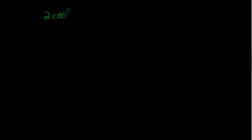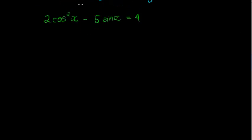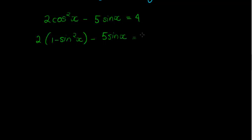Let's look at another equation: 2cos²x - 5sinx = 4. I want to solve for x. My suggestion is to let the trig ratio equal y, but which trig ratio? We need to choose to work with either sine or cosine. In this case, we can't change sine into cosine, but we can change cos²x into sine squared using the identity: 2(1 - sin²x) - 5sinx = 4.